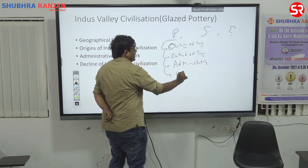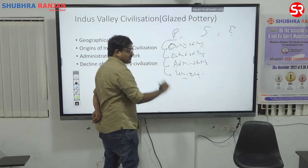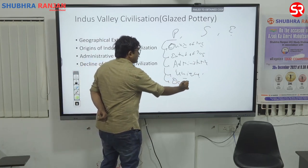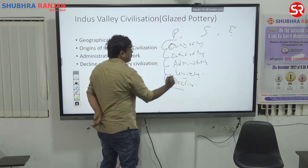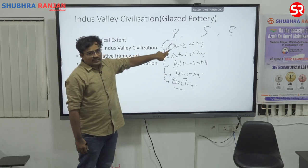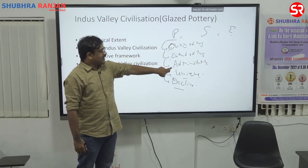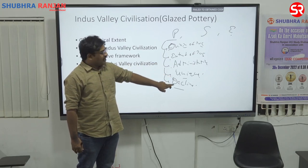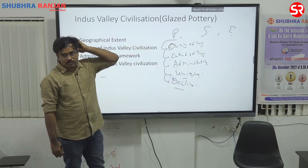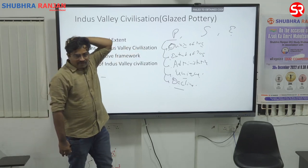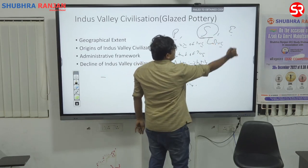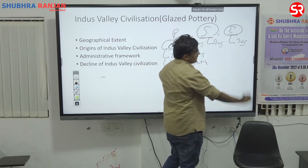So in total, five sub-dimensions of the polity part: origin, extent, administrative system, uniqueness and decline. Then the second part is the society of Indus Valley Civilization, and third is the economy of Indus Valley Civilization, which we will discuss separately.